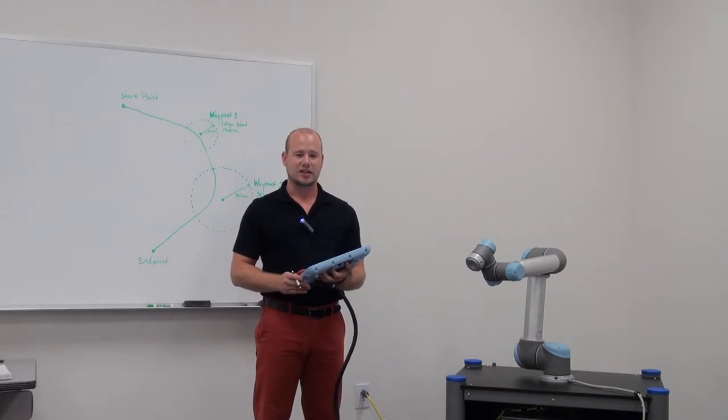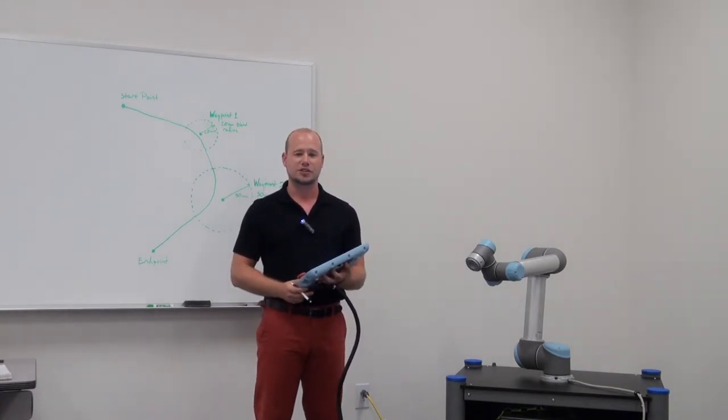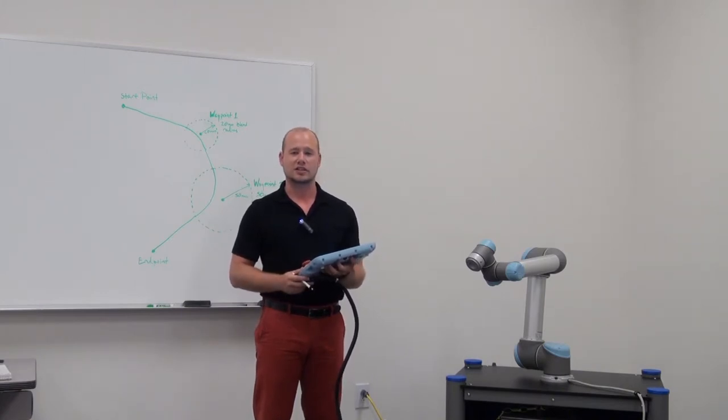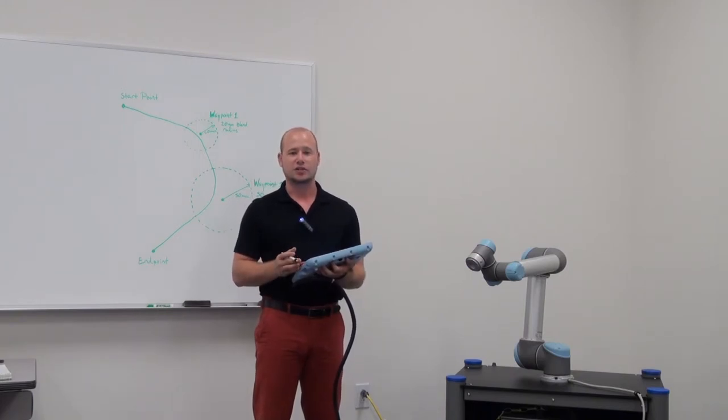Next is the move P command. Now P stands for process. The tool center point will still move in a linear motion, but this is more for gluing type applications or dispensing. The robot can move with constant velocity around curves or blends.